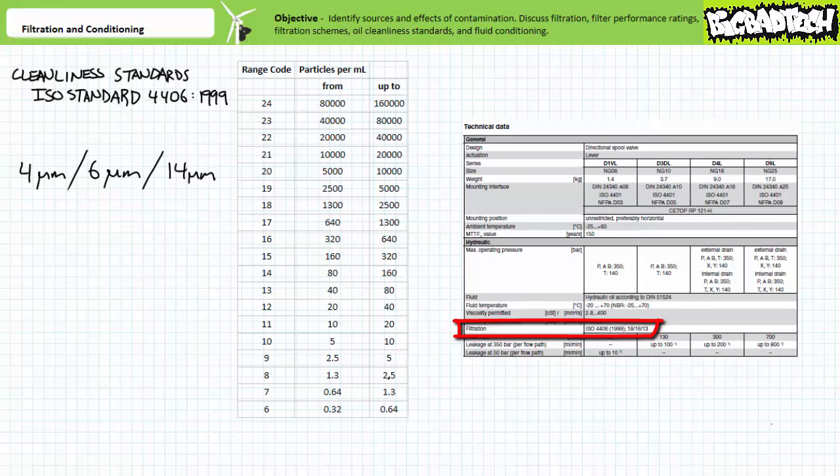For example, this directional control valve data sheet is expressly calling for oil with an 18-16-13 cleanliness rating. This means anywhere from 1,300 up to 2,500 particles greater than 4 microns, but less than 6 microns are present per milliliter. Anywhere from 320 up to 640 particles greater than 6 microns, but less than 14 microns are present per milliliter. And anywhere from 40 up to 80 particles greater than or equal to 14 microns are present per milliliter. If the data sheet says a particular component necessitates an oil with a two number ISO cleanliness code, it ordinarily means ignore particles less than or equal to 4 microns and concentrate on the 6 and 14 micron bin. For example, if this directional control valve didn't care about particles less than or equal to 4 microns, it'd be calling for 16-13 oil.